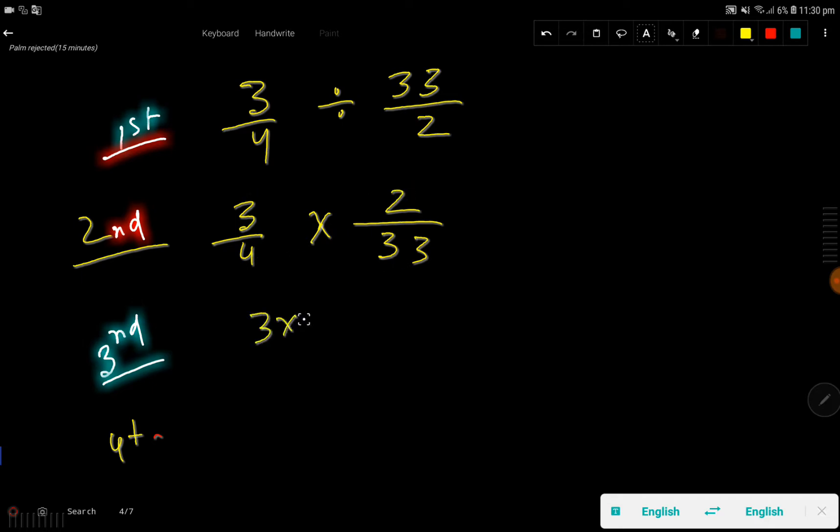In the third step, I have to multiply top to top and bottom to bottom. That is 3 times 2, then 4 times 33. So we are getting here a new fraction.